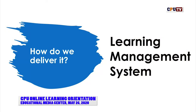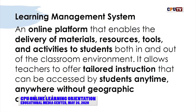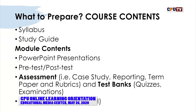How do we deliver it? You have heard the previous lecture talk about your learning management system. In CPU, we do this inside the classroom; here in online learning, we'll be doing it through your learning management system — an online platform that allows delivery of your materials, resources, tools, and activities to students, with tailored instruction that can be accessed by students anytime, anywhere, without geographic constraints. Or in simple terms, that will be your online classroom through your learning management system. After this orientation, you're expected to prepare these documents. We don't expect these documents to be perfect, but we expect them to be improved during your training. We want to have these documents so that we will have a start-up for your training.